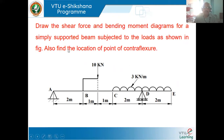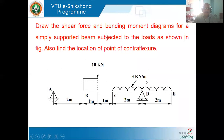Now to start with this problem, we have to draw shear force and bending moment diagram for a simply supported beam with the load shown in the figure, and we also have to locate the point of contraflexure. Looking at this beam, we have simple supports at A and D. The salient points are A, B, C, D, and E. Here we have a uniformly distributed load of 3 kilonewton per meter over a length of 4 meters. And this is an overhanging beam.